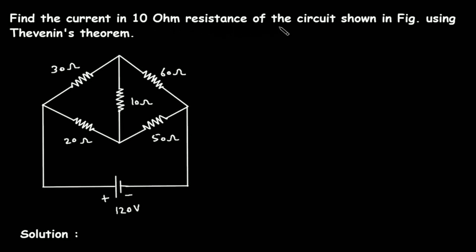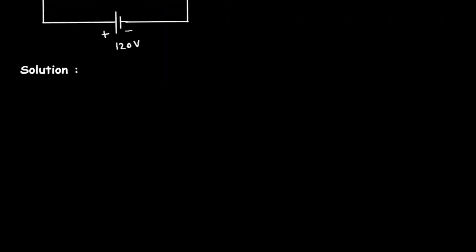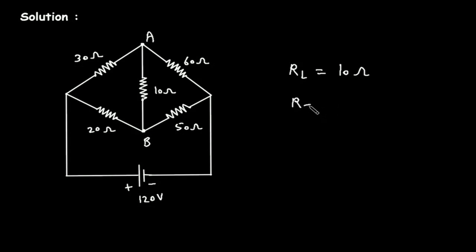Find the current in the 10 ohm resistance of the circuit shown in the figure using Thevenin's theorem. We have to find the current through this 10 ohm resistance using Thevenin's theorem. Let's say this is terminal A and this is terminal B. This will be our RL, and RL is equal to 10 ohm. Now we have to find RTH and VTH.